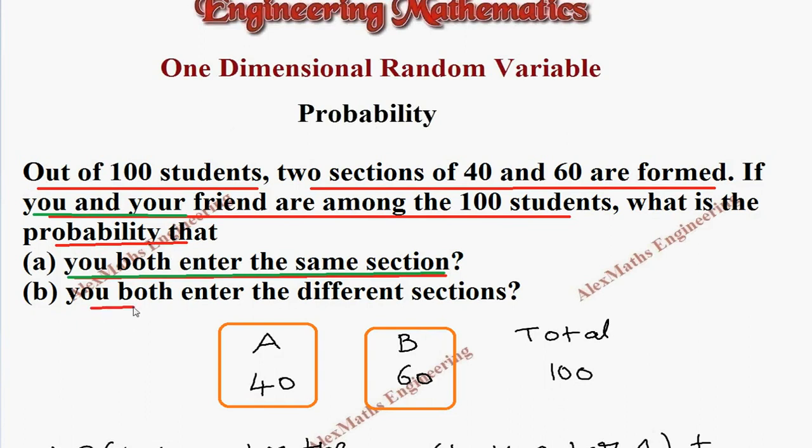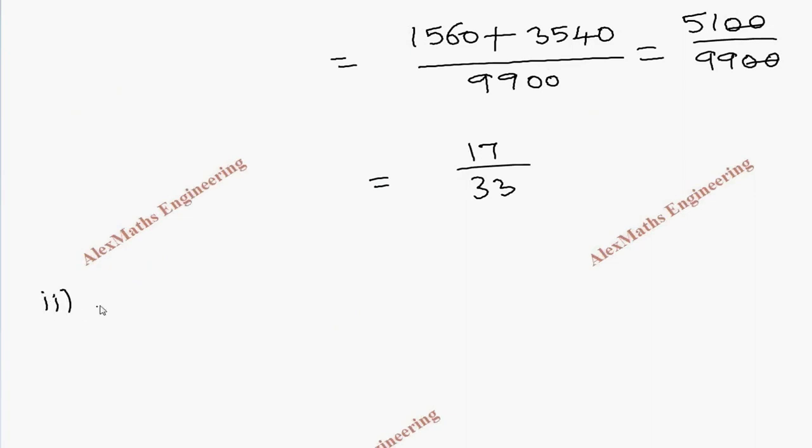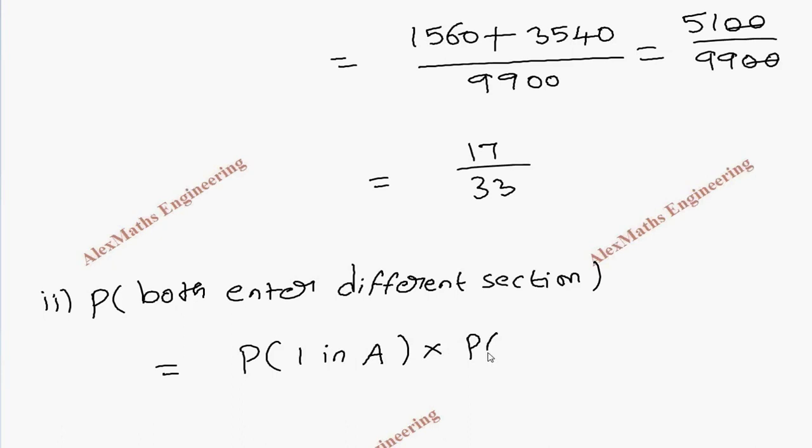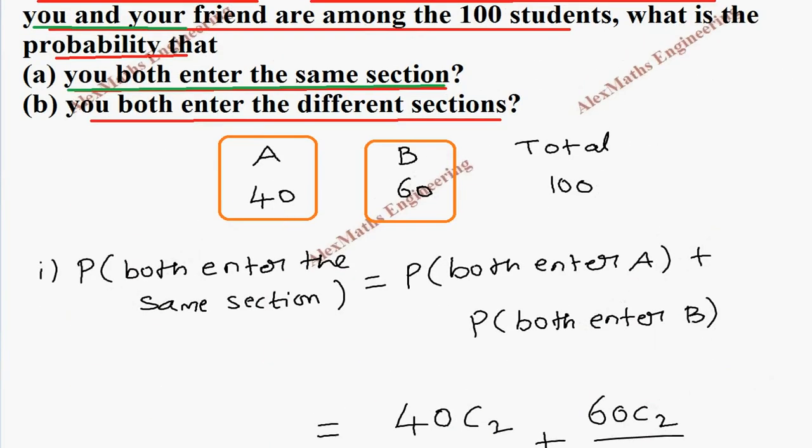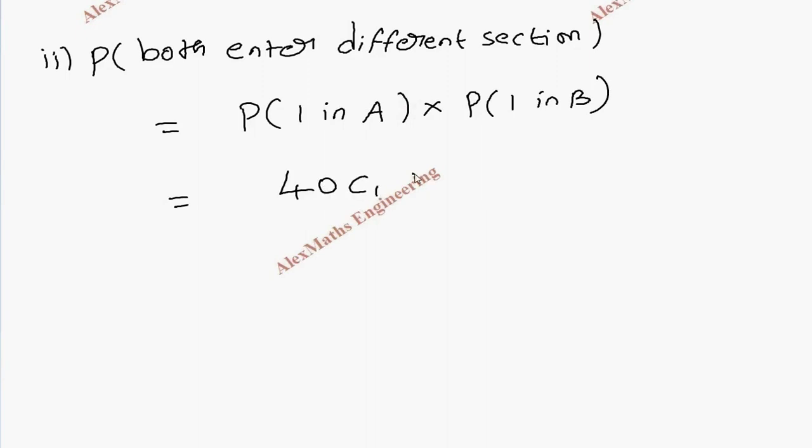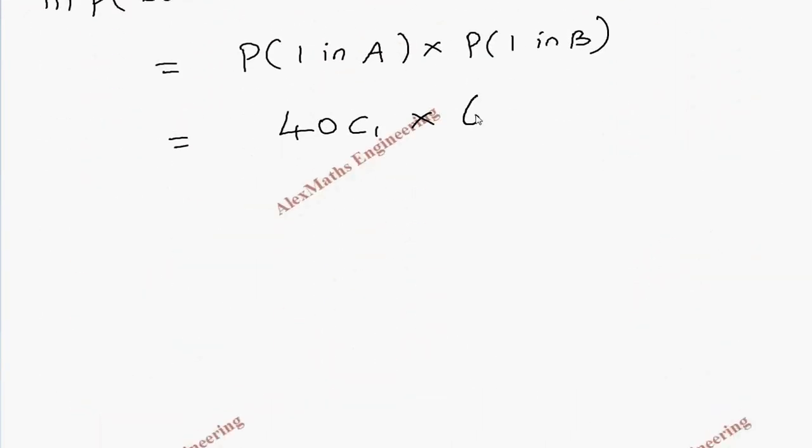Then coming to subdivision 2, they ask you both enter different sections. It means one person in section A and another in section B. P of both enter different sections equals P of one person in A times P of one person in B. So one person among the 40 is 40C1 times one person in section B, which is 60C1, whole divided by total 100C2.